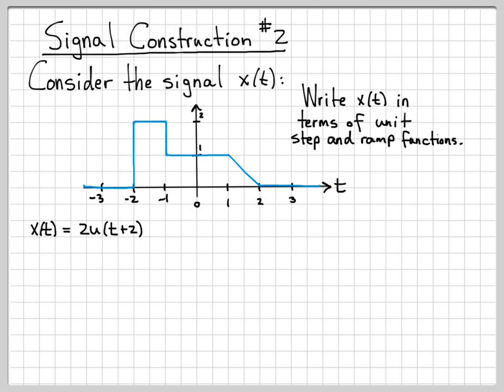At time minus one, something else happens though. Another step occurs. So we step down a value of one. So at time minus one, we need to step down. So we need to add in a negative unit step at time t plus one. This value is held all the way up until t equals one.